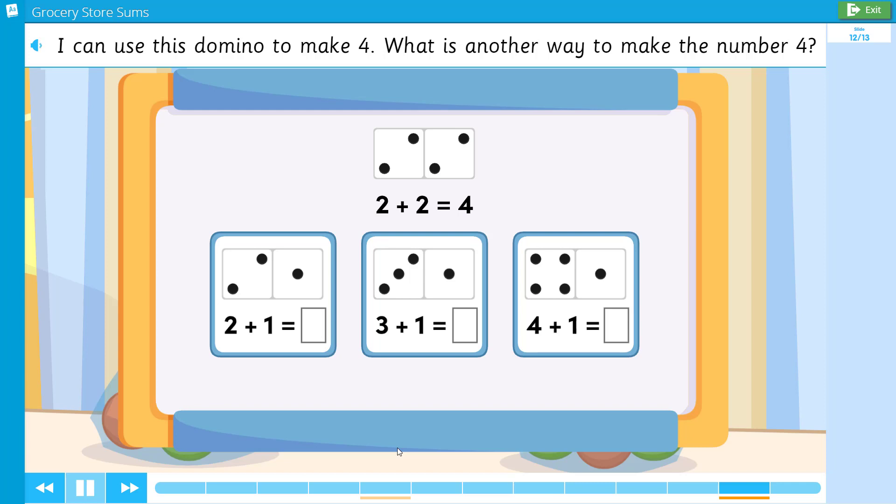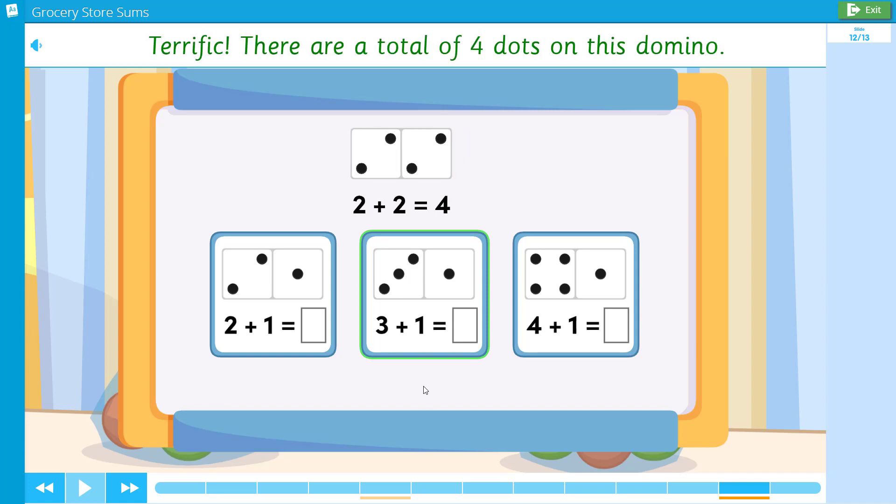I can use this domino to make four. What is another way to make the number four? Two plus two equals four. Terrific! There are a total of four dots on this domino.